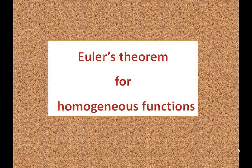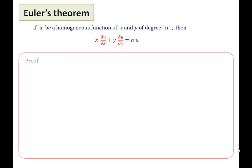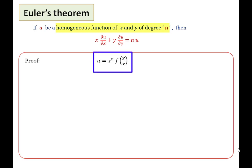Now we will discuss Euler's theorem for homogeneous functions. Euler's theorem states: if U is a homogeneous function of X and Y of degree n, then X (∂U/∂X) + Y (∂U/∂Y) = nU. We will now prove this theorem. Since U is a homogeneous function of degree n, U can be written as X^n f(Y/X).